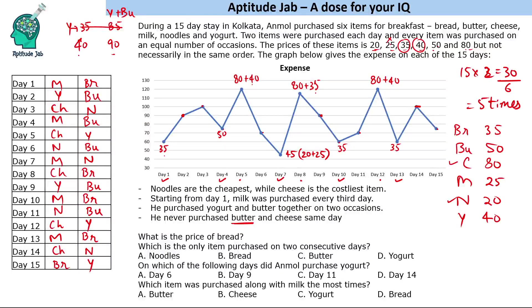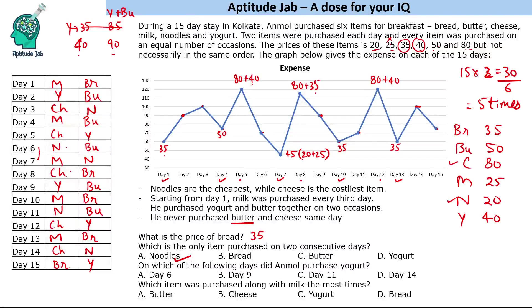Now let us answer the questions. What is the price of bread? The price of bread is 35. Which is the only item purchased on two consecutive days? Looking at our table, noodles was purchased on day 6 and day 7 — noodles is the only item purchased on two consecutive days.